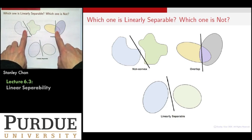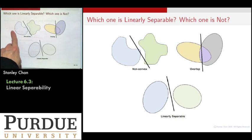These two are hard for the following reasons. In this example, it is very hard to find a decision boundary because the set is non-convex.